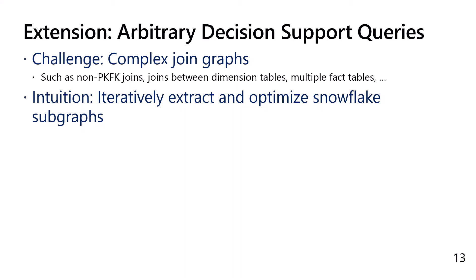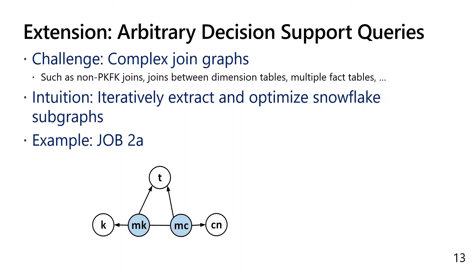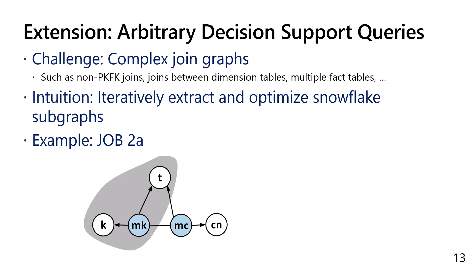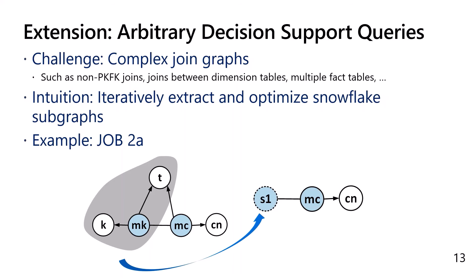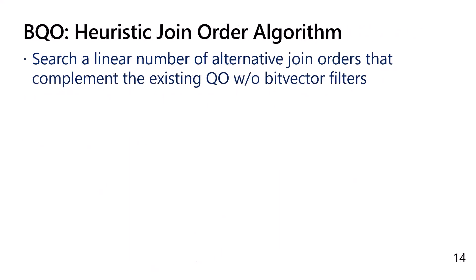In practice, decision support queries are more complex — they can have non-PKFK joins, joins between dimension tables, and multiple fact tables. We leverage our analysis and propose an algorithm to produce a join order for arbitrary decision support queries by iteratively extracting and optimizing snowflake subqueries. For example, with JOB benchmark query 2A, which has non-PKFK joins between MK and MC where both are fact tables, we start by picking one fact table, say MK, identify the snowflake associated with it, optimize its join order, and shrink it to a single relation S1. We continue until a single fact table remains, then optimize the final subgraph with both our analysis and heuristics. Our algorithm searches a linear number of alternative join orders complementary to the existing query optimizer's plan search.